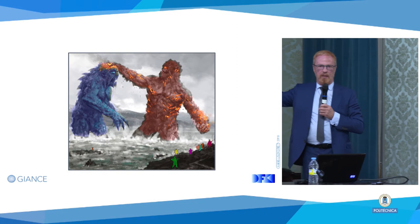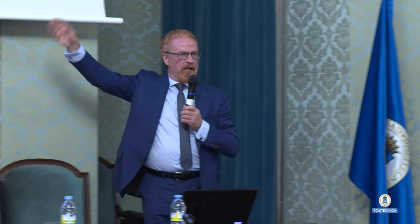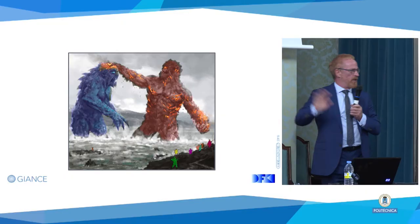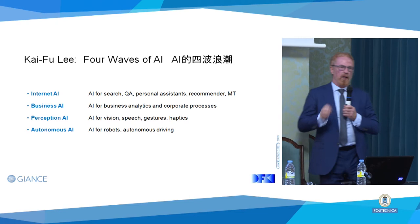After reading his book, I got this picture of what's going on in the world — you can see which one is China, which one is the US. The green one down there is Europe, together with Australia, Canada, and all of these. They are also there. So this is Kai-Fu Li's picture of the AI race.